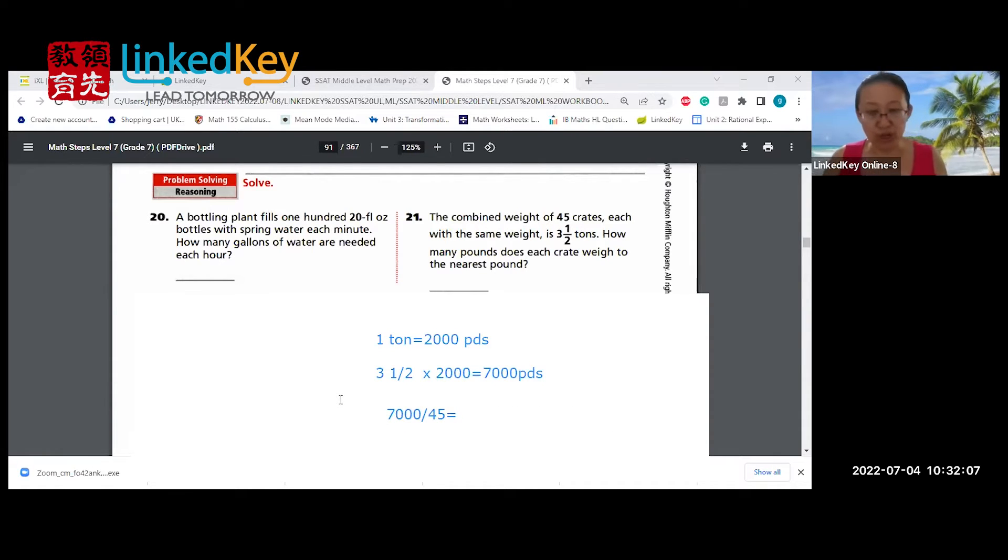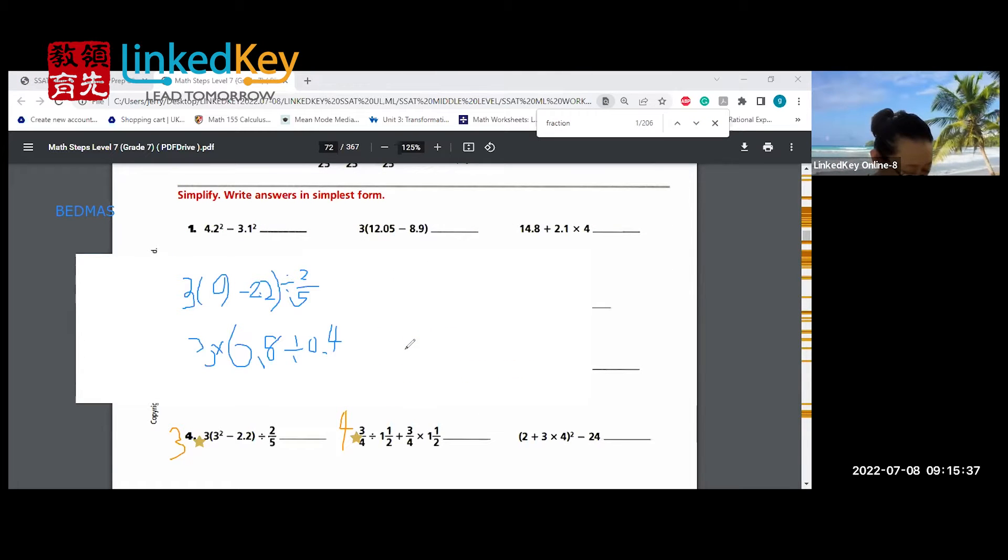Who knows what? By 6.8 we have 20.4, and then divide by 0.4.